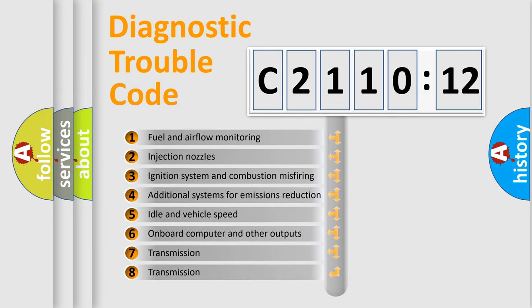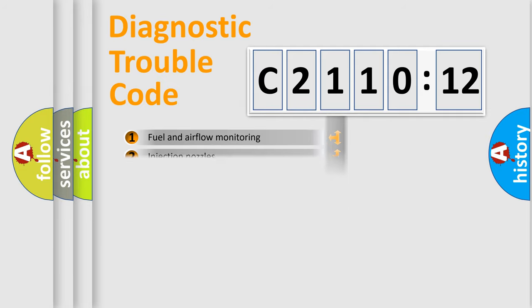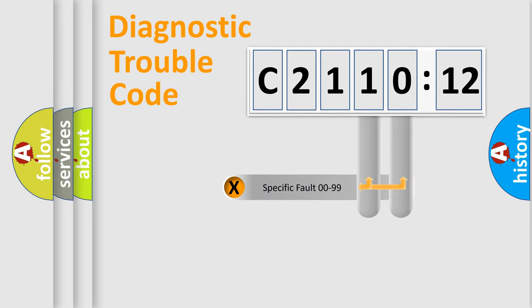The third character specifies a subset of errors. The distribution shown is valid only for the standardized DTC code. Only the last two characters define the specific fault of the group.